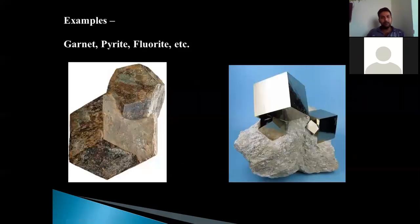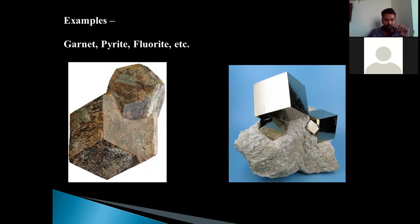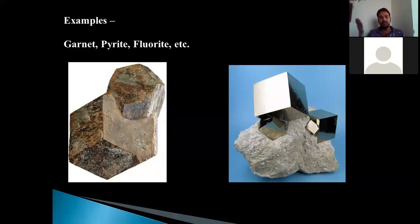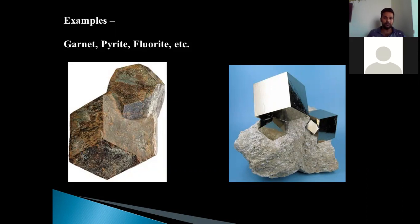Let us see some well-known examples of the isometric system. They are garnet, pyrite, and fluorite. You can see the garnet crystal — a very beautiful example showing great symmetry, on the left of your screen. On the right of the screen you can see pyrite, which forms perfect natural cubes, very perfectly developed. Both garnet and pyrite belong to the isometric system and are well-known examples of it.